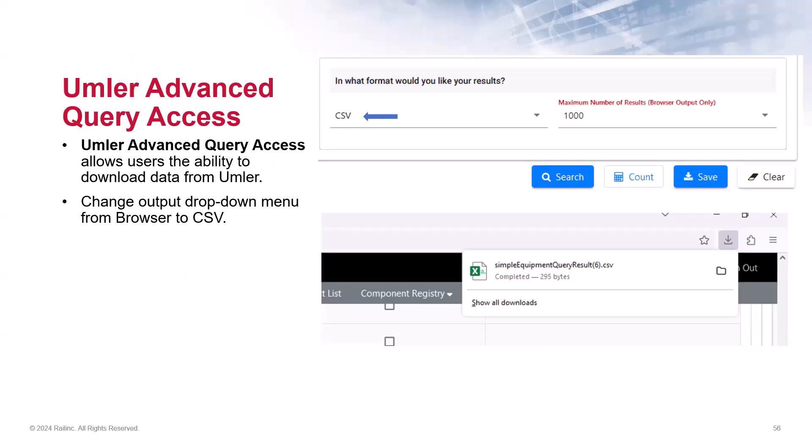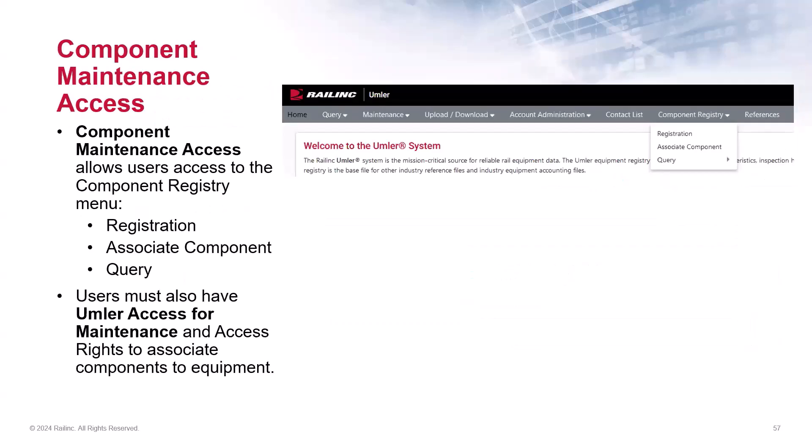Note that company admins can also check the real-time usage statistics in Umler for all CSV downloads for the marks they manage. Users that have component maintenance access will see component registry in the main menu bar. With this access, they can register rail car components, associate those components to a rail car, and run various queries. Users must have Umler access for maintenance to associate components to rail equipment.